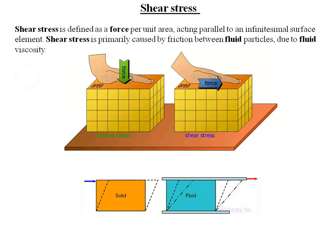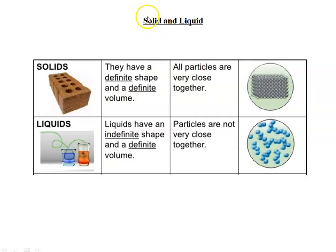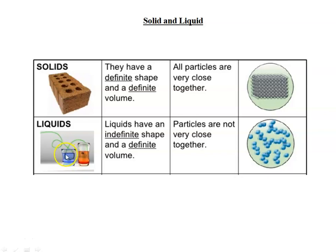Now, what is the difference between a solid and a fluid? Going back to the previous slide: a solid has a definite shape and definite volume, and its molecules are very close together. A liquid has an indefinite shape but definite volume. You might be confused by 'indefinite shape' — look at these two glasses with water.